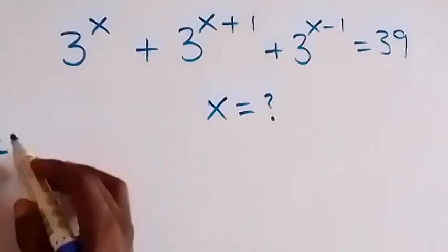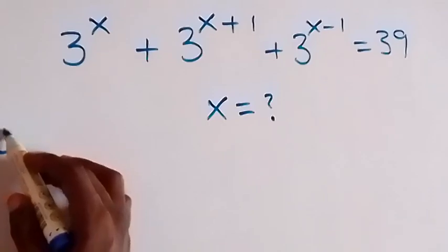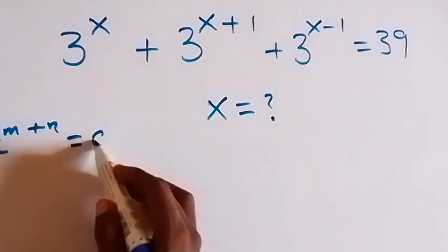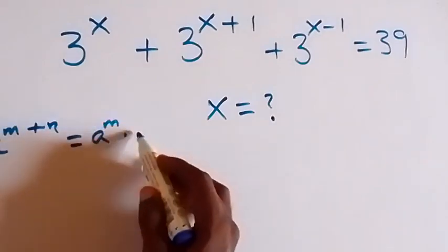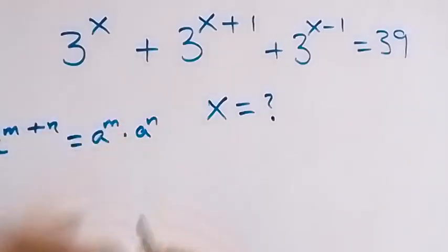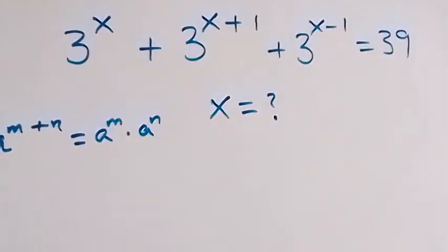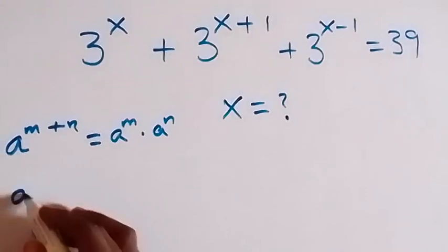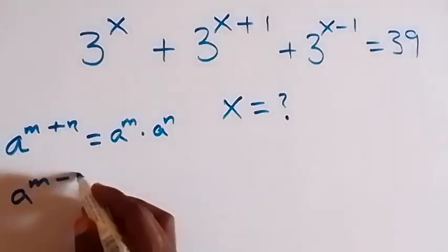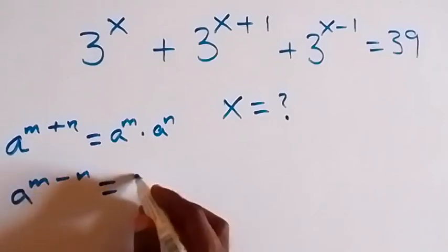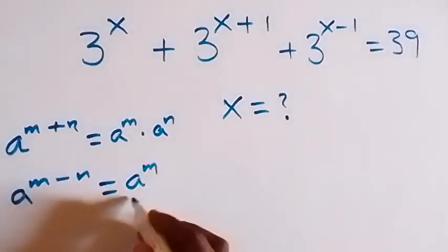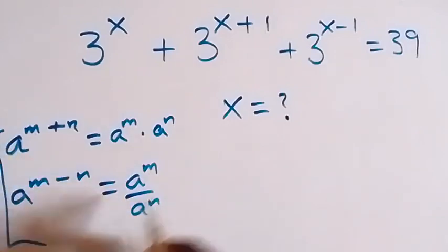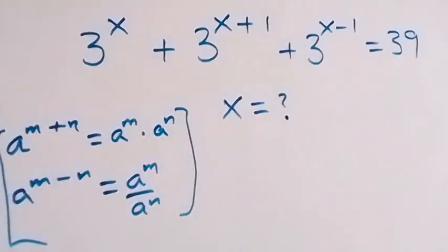When we have a raised to power m plus n, we can write this as a raised to power m times a raised to power n. And also, when we have a raised to power m minus n, we can write this as a raised to power m divided by a raised to power n. So let's apply this on what we have here.